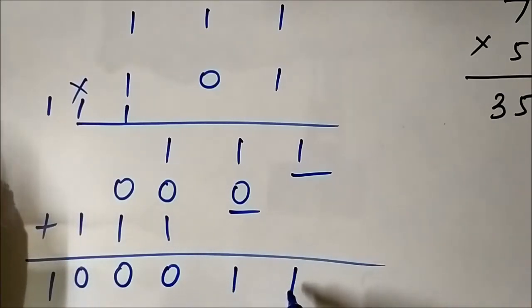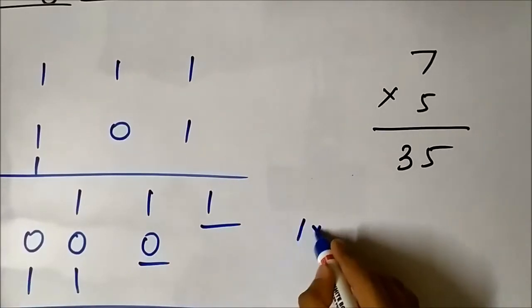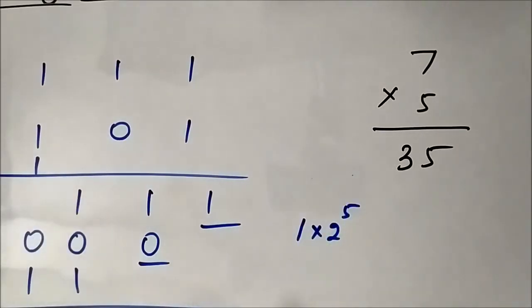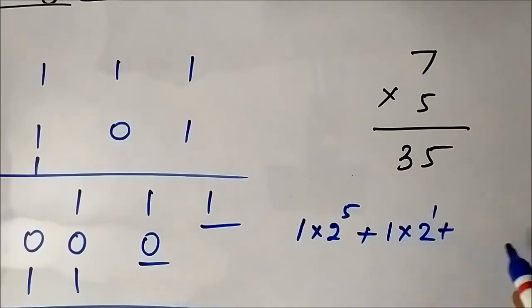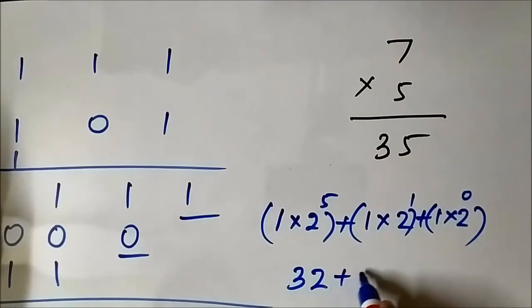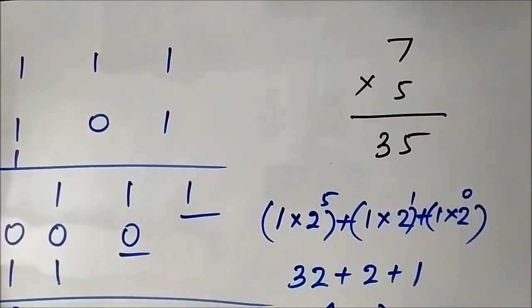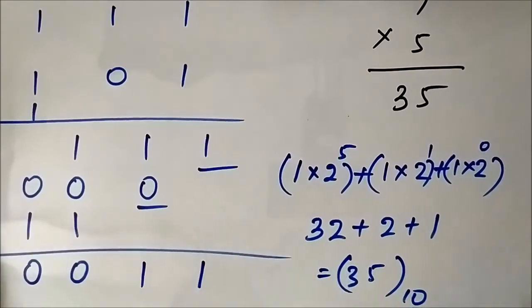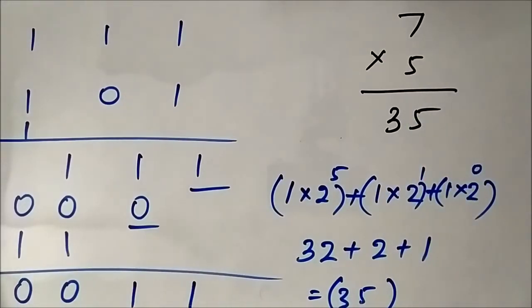Converting 1 0 0 0 1 1 to decimal using the sum-of-weights method: 1×2⁵ + 0 + 0 + 0 + 1×2¹ + 1×2⁰ = 32 + 2 + 1 = 35. We got the same result — 1 0 0 0 1 1 in binary equals 35 in decimal, matching 7×5 = 35.